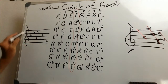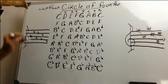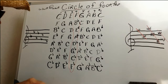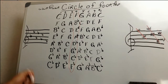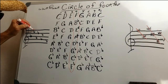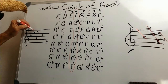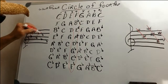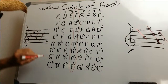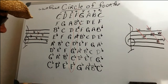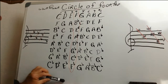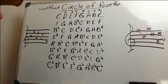And that's the key signatures flat-wise going all the way down. That's pretty much how they're built — and that's how the circle of fifths and fourths work, in a short nutshell.